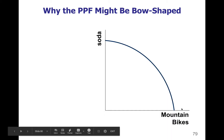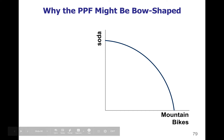PPFs don't have to be a straight line — they can also be bowed outward. For example, consider an aluminum factory that can make cans for soda or produce mountain bike frames. For this one, it's not a straight line production possibility curve. The slope of a straight line stays constant, but in a curved line like this, the opportunity cost is going to change because the slope changes depending on which two points you're moving to and from.